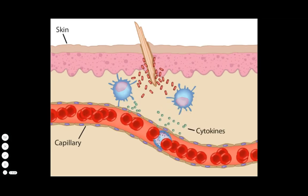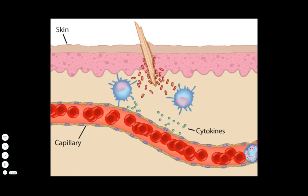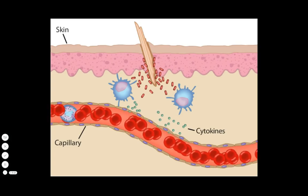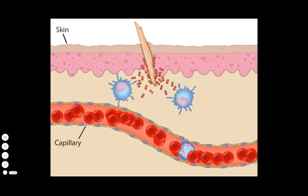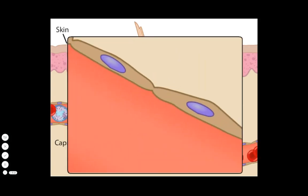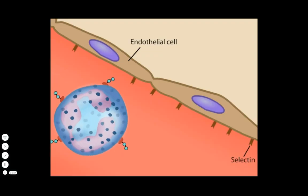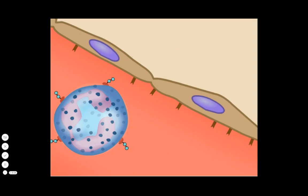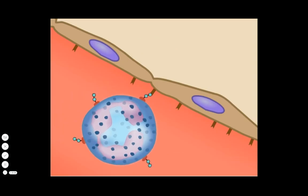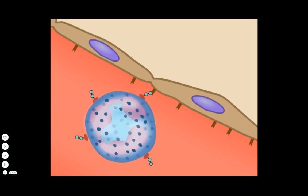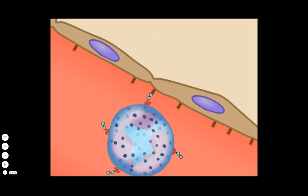Cytokines are small proteins that regulate the immune response. Some diffuse into the vasculature and stimulate endothelial cells to express specific receptors called selectins. Selectin binds to carbohydrates on the surface of neutrophils, snagging the cells as they flow by in the bloodstream and slowing them down such that they roll along the endothelium.